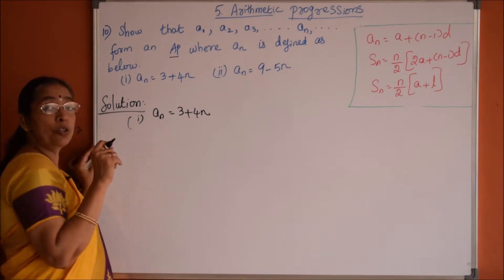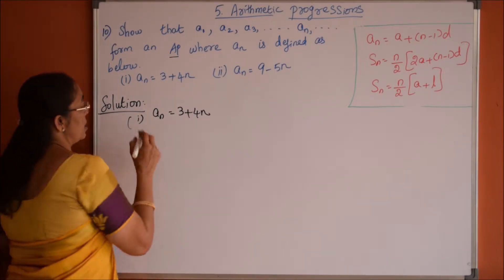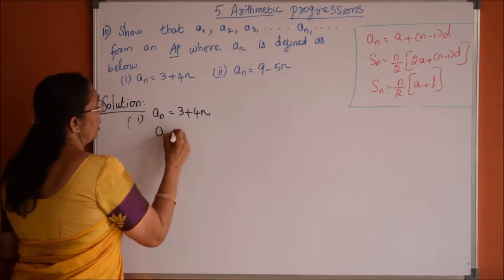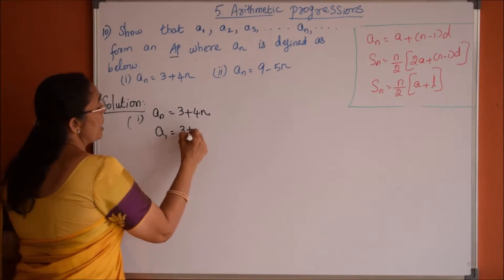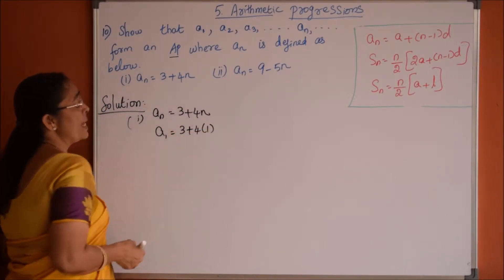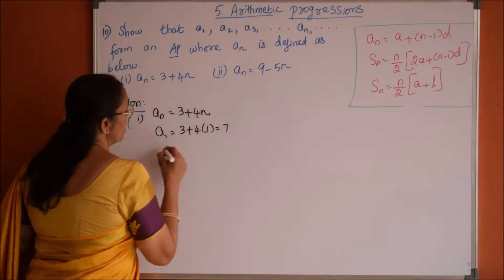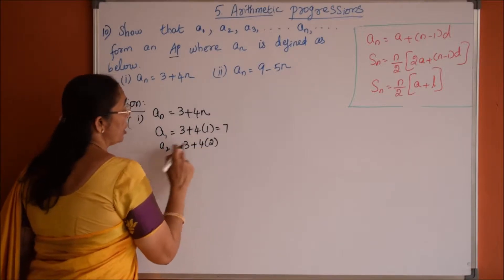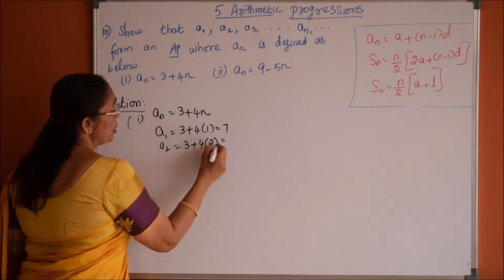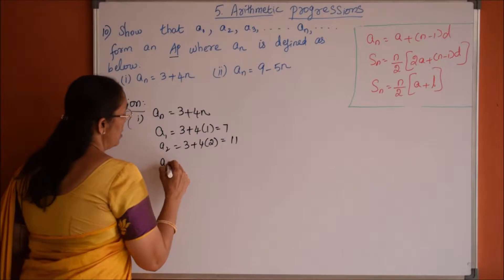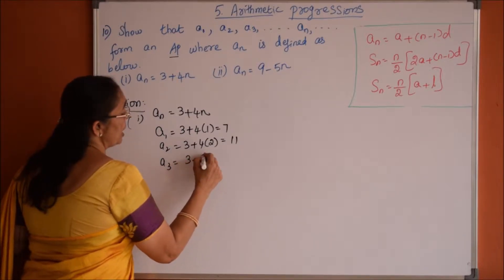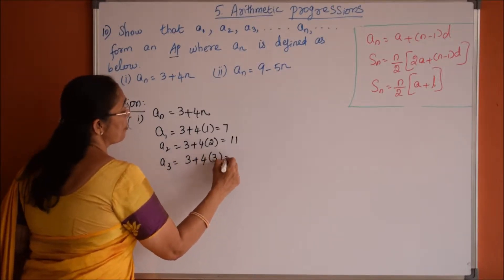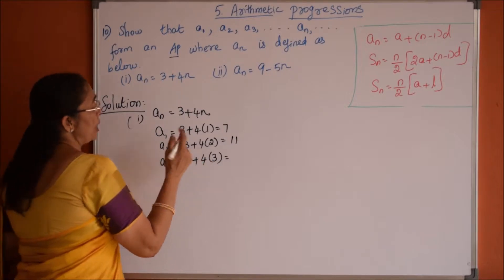First let me find out the values of a1, a2, a3, etc. So how we will get a1 value? a1 is nothing but 3 plus 4 into n place substitute 1, so which is 3 plus 4, 7. a2 will be 3 plus 4 times of 2, n place 2, so 4 twos are 8, 8 plus 3, 11. Now a3 is equal to 3 plus 4 times of 3, 4 threes are 12, 12 plus 3, 15.